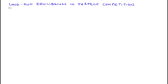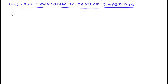Hi everyone. In this video I'm going to be talking about long-run equilibrium in perfect competition. The condition I'm going to explain is that in equilibrium in the long run, firm profit — so that's pi — will be equal to zero. This corresponds to price being equal to the minimum of firm average total cost, so P is equal to ATC min. In the first half of the video I'm going to explain how we get to these conditions, and in the second half I'm going to go through how the model adjusts towards this equilibrium.